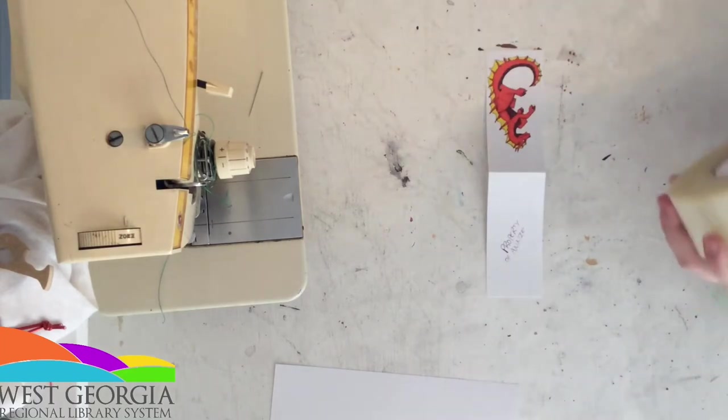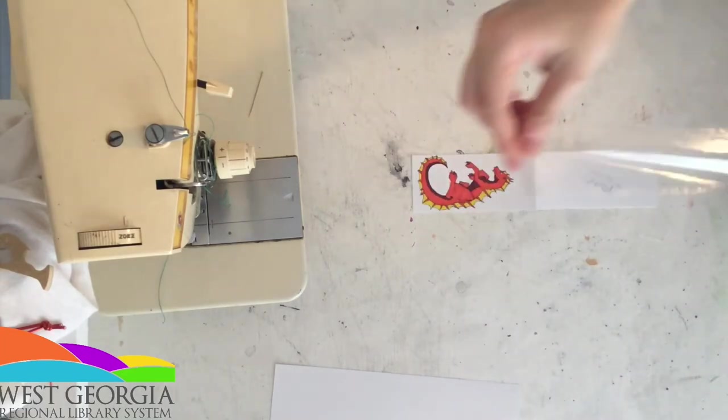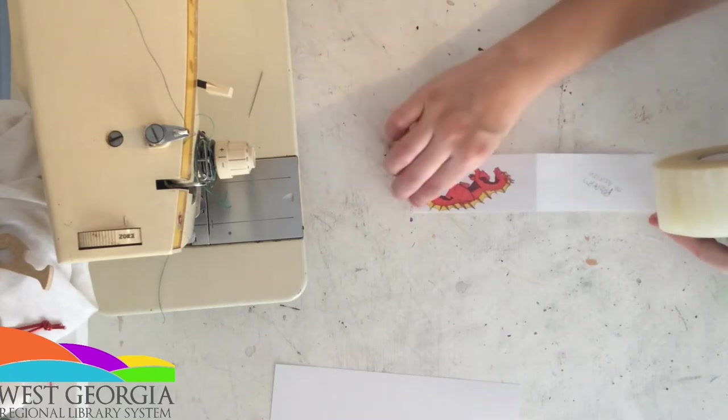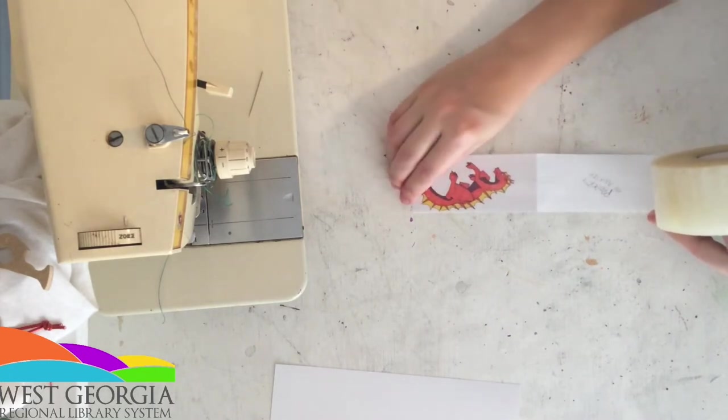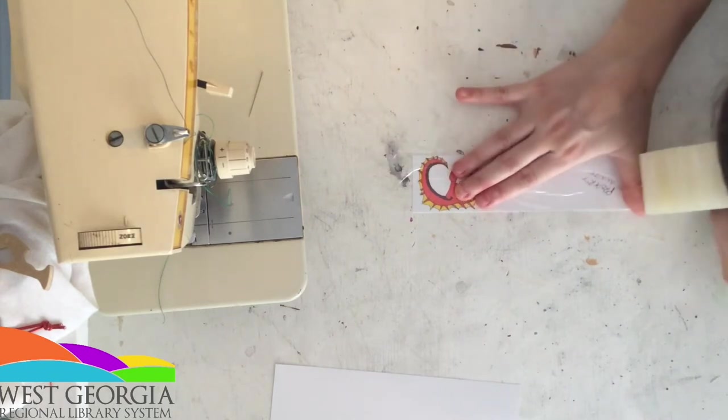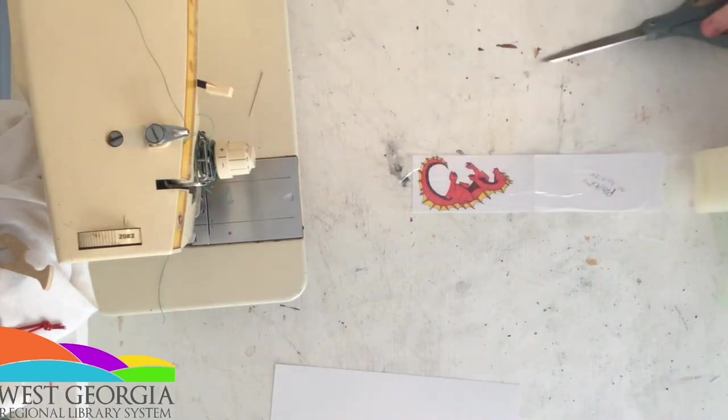From here take your tape, fold out your bookmark and carefully, not like me, place your tape across your design and across the back of the bookmark as well. I recommend using a thicker packing tape than what I have. I was using a very cheap brand so it caused all those wrinkles.